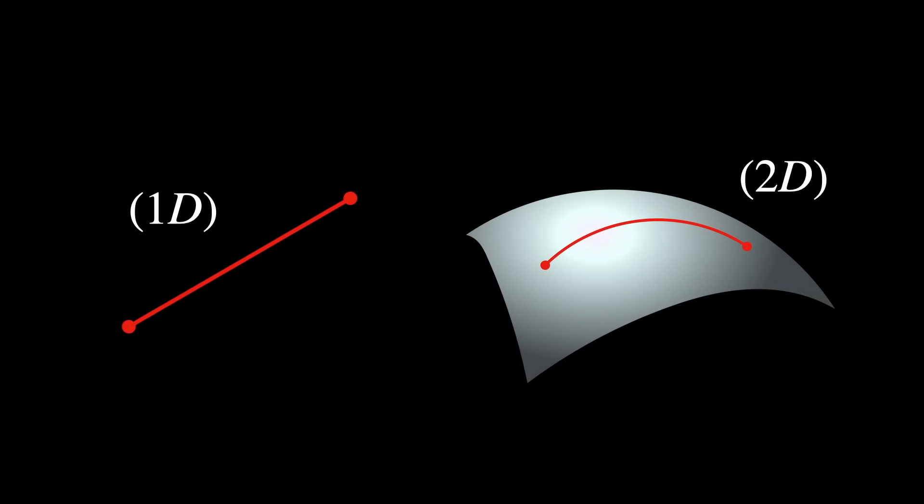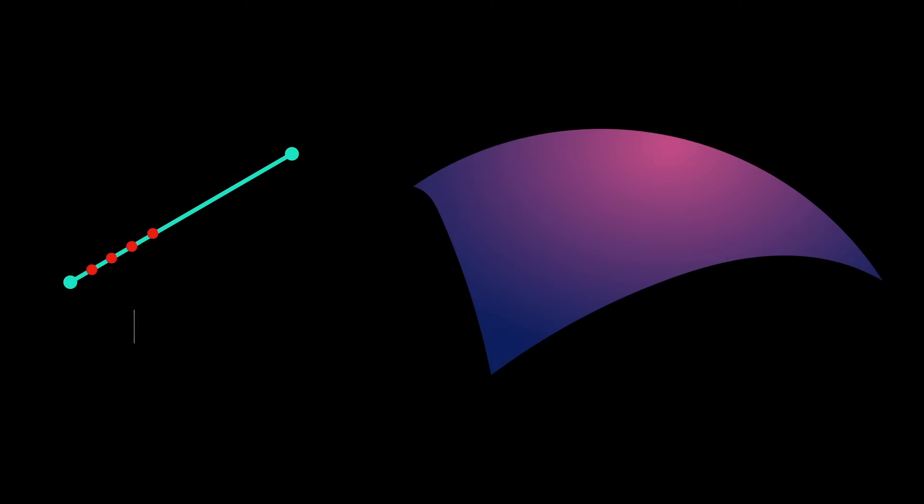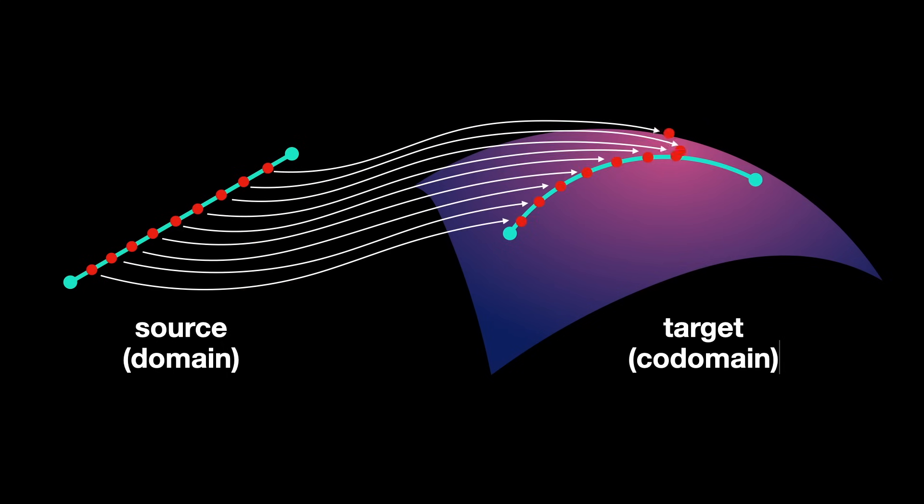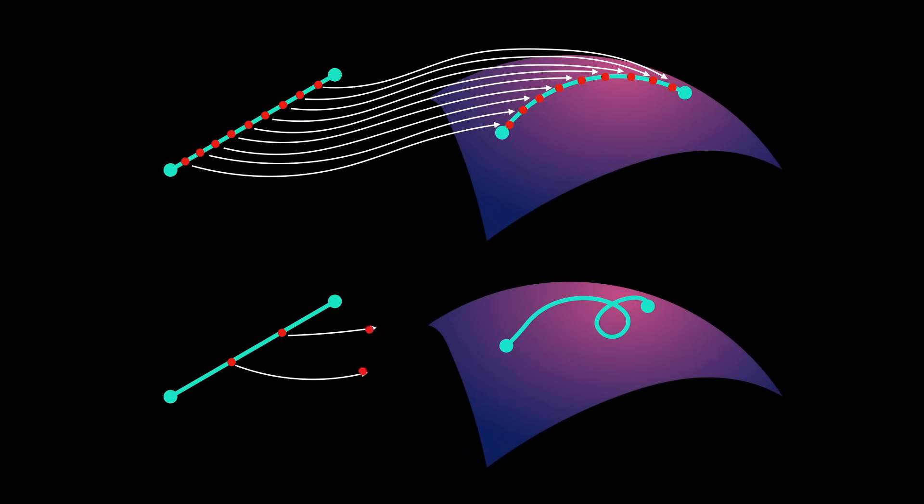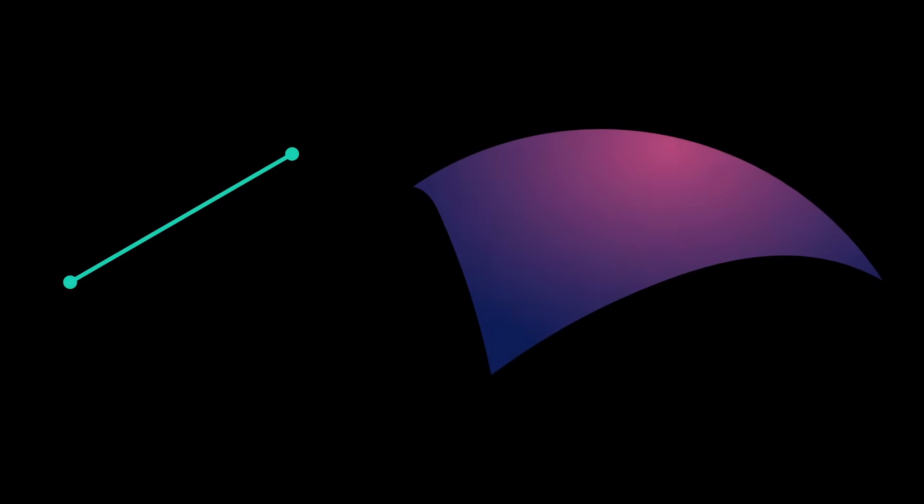Right? Not necessarily. First of all, what is an embedding? An embedding is a map that associates each point of a source space to a unique point in a target space, such that, first of all, the points stay distinct. So, no two different points in the source space get mapped to the same place.